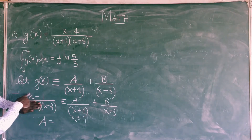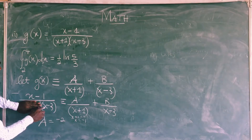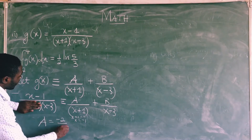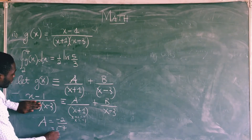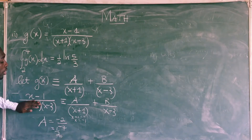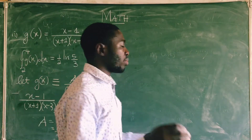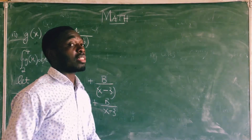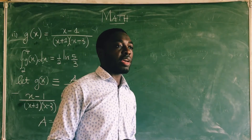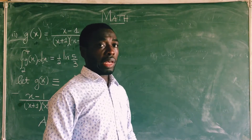If I substitute negative 1 in the numerator, I get negative 1 minus 1 which is negative 2, and if I substitute negative 1 in the remaining denominator I get negative 4, so it gives me 1 over 2. You can equally solve it using the normal method where you expand the right hand side and compare with the left hand side — either way you should get the values of A and B.